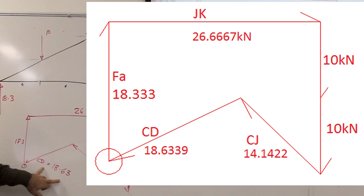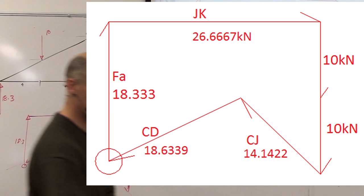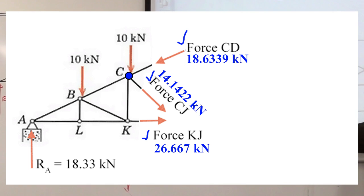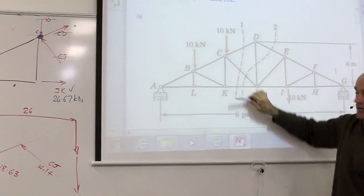so CJ is 14 kilonewtons, CD is 18 kilonewtons. We've completely solved that portion of the truss. If you went back to the original truss now, you could say JK, this member here, has got 26 kilonewtons. This one's got 14, and that one's got 18. We've solved all of those.